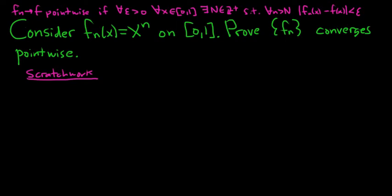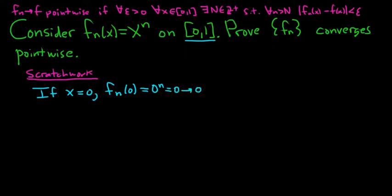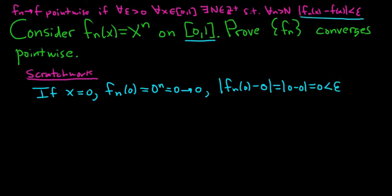The sequence has to converge on this set, so let's consider different cases. If x is 0, we look at f sub n of 0 — you just plug in 0 — and you get 0 to the n, which is just 0. So this converges to 0 as n approaches infinity. In the proof, we'll have |f sub n(0) − 0| = |0 − 0| = 0, which is less than epsilon. So it works out really easily.